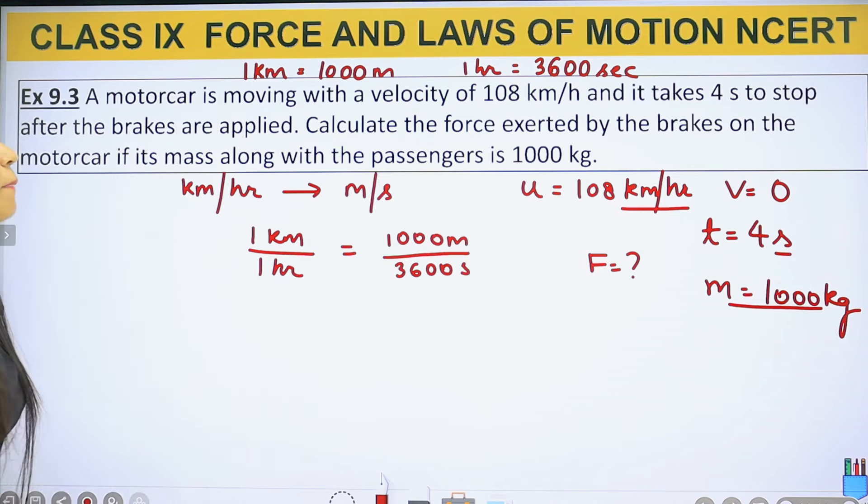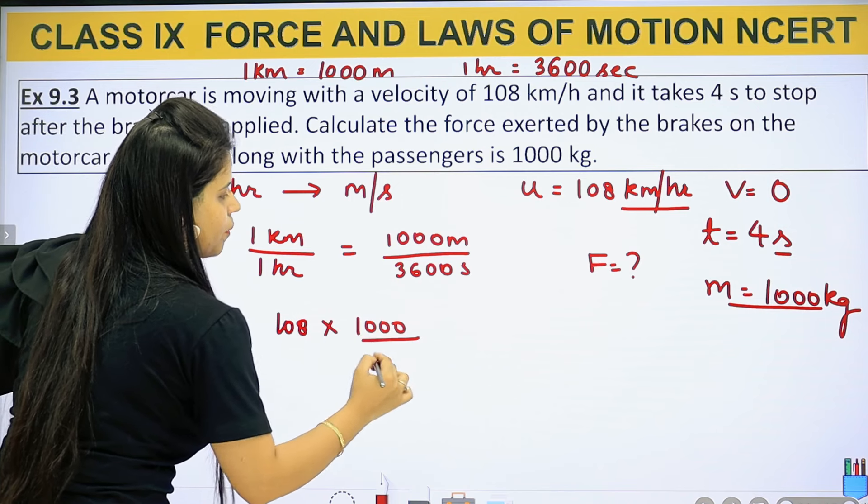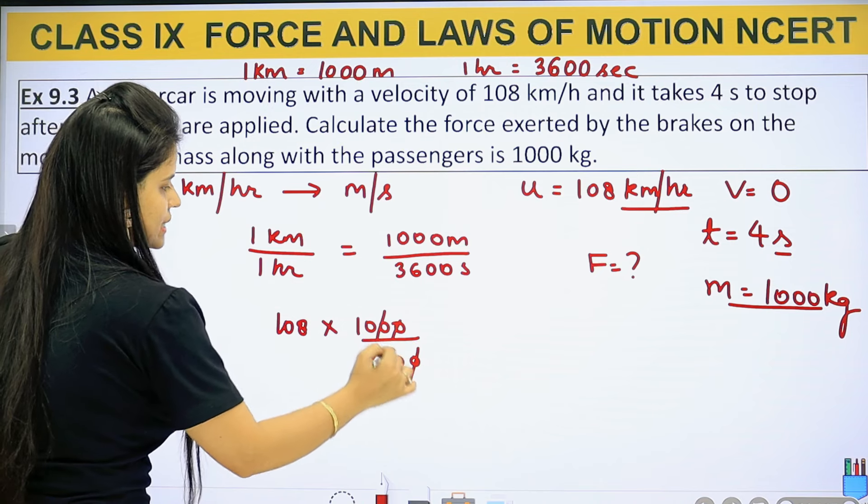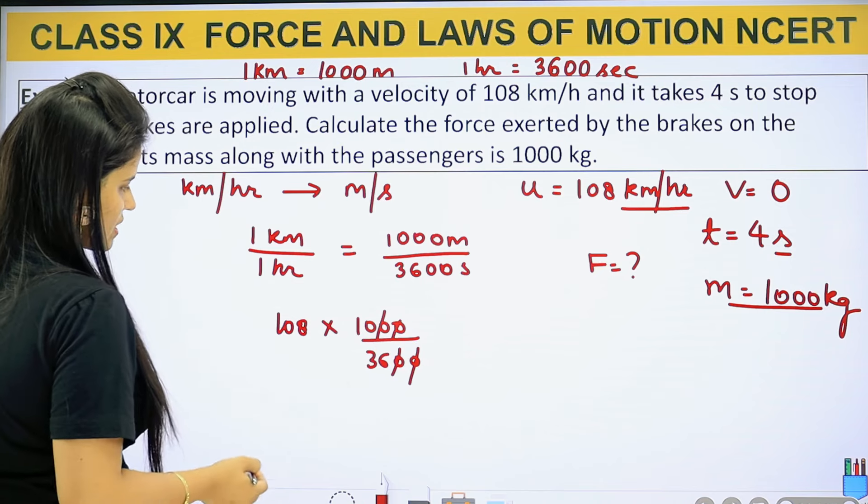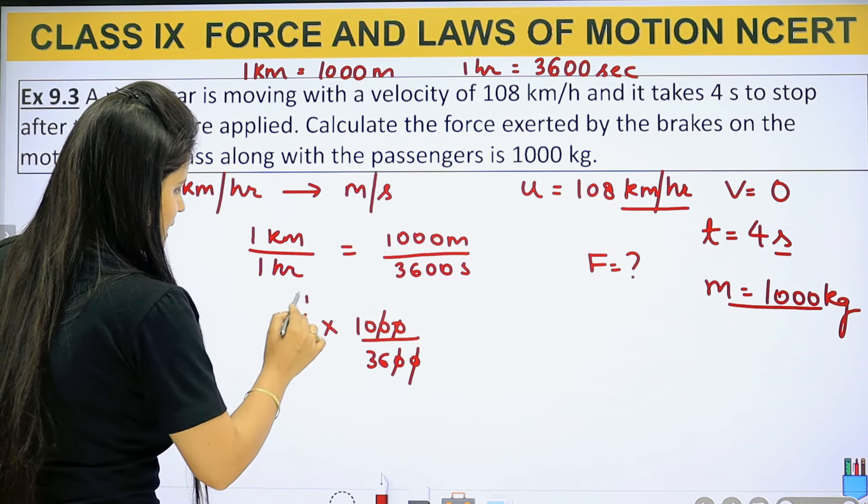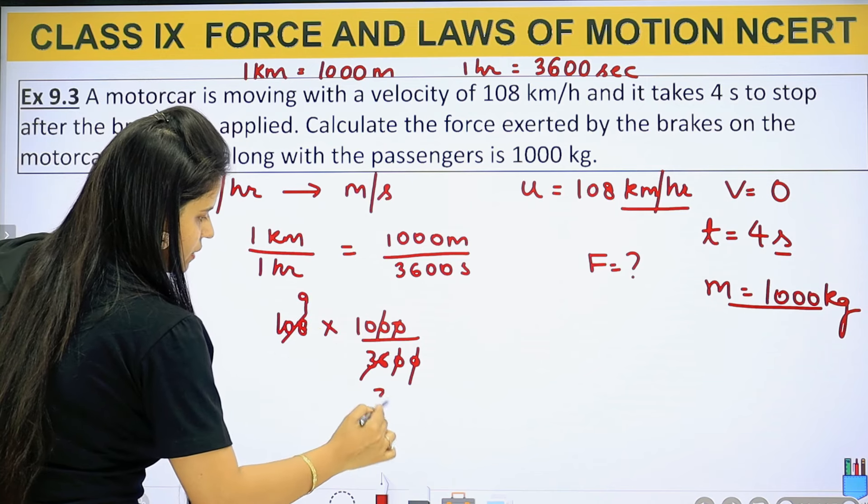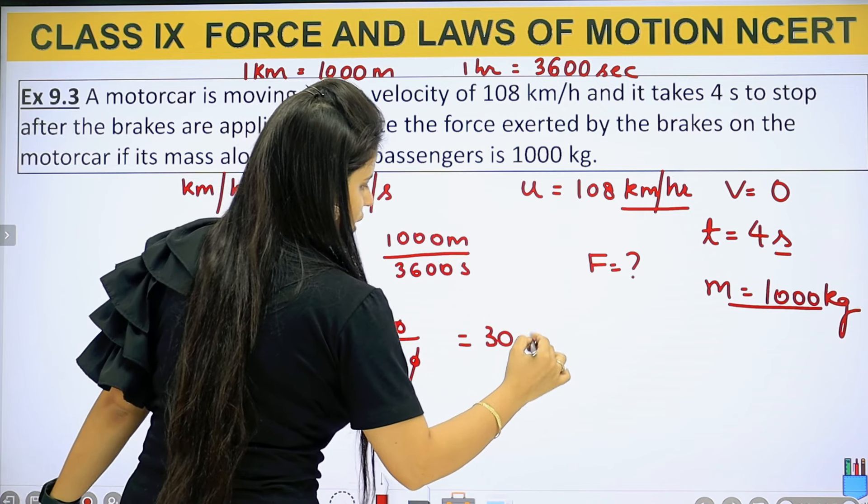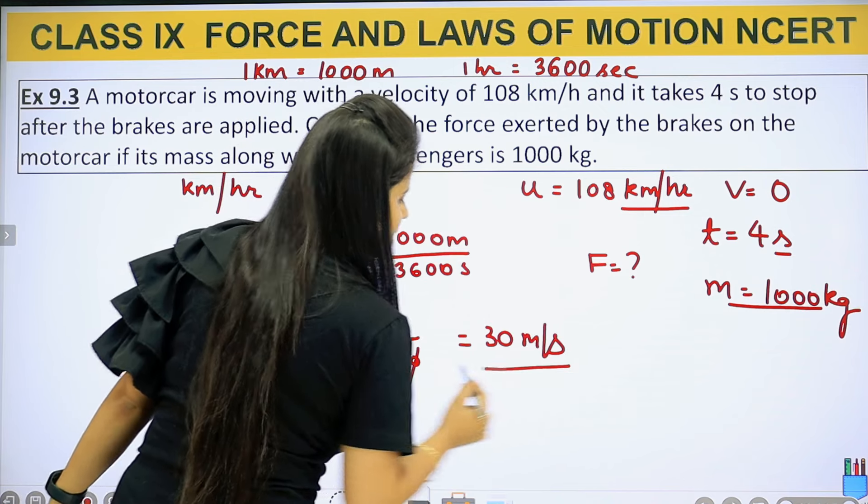Now we will convert. Simple, 108 multiply it by 1000 meter upon 3600. Now we will cut it: 0-0 cancel, 0-0 cancel, 36, 108 will come from 12 to 12, this will come from 9, and this will be 3. This will come from 3, 3 into 10 is 30. So now we have 30 meter per second.